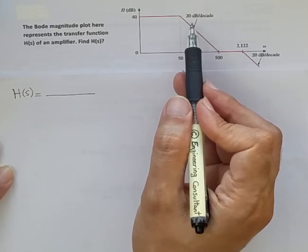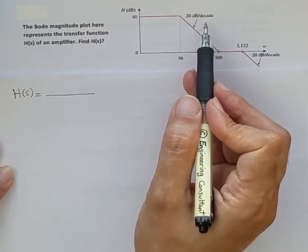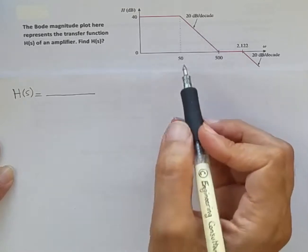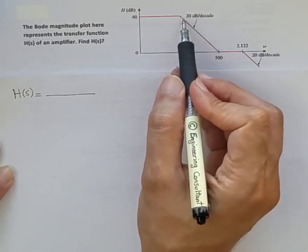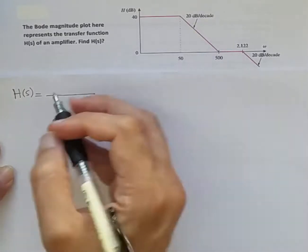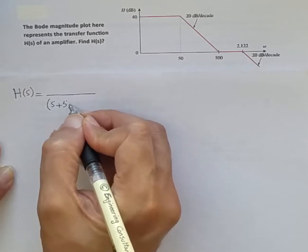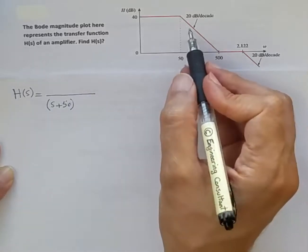This is a representation of the existence of a pole at 50 radians per second. So in the denominator we should have (s + 50). This continues up to the point we get to 500 radians per second.